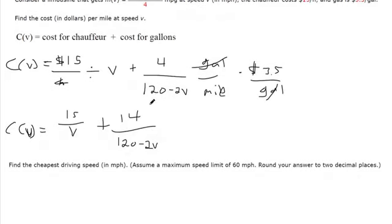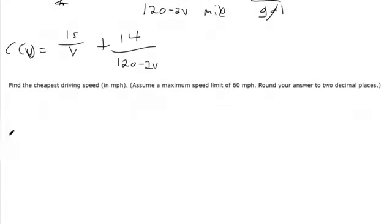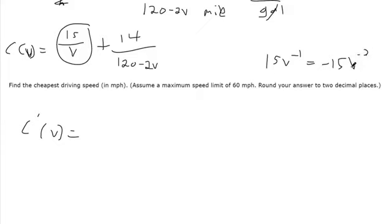That's the cost they're looking for. Now for the cheapest driving speed, we want to find critical points and determine whether they're maxes or mins. This is our cost per mile. If we take a derivative and set it equal to 0, we're finding all the potential maxes and mins of the cost function. The derivative of this term - remember that's 15V to the negative first - the negative 1 comes down and multiplies, then it gets reduced by 1. That's negative 15 over V squared.